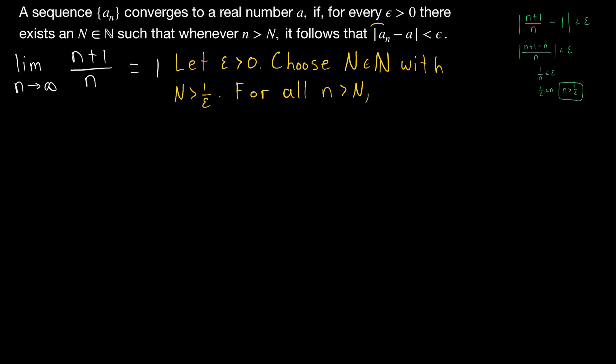So for all n greater than big N, we consider this expression, the distance between terms of the sequence and the supposed limit. So we have the absolute value of n plus 1 over n minus 1, and we want to show that this is less than epsilon. Just as before, we can rewrite this as the absolute value of n plus 1 minus n, bringing the negative 1 into this fraction. So n plus 1 minus n all over n, and then we have n minus n, just leaving 1 in the numerator. So that's equal to the absolute value of 1 over n. But 1 over n is always positive, since n is a natural number. So this is equal to 1 over n.